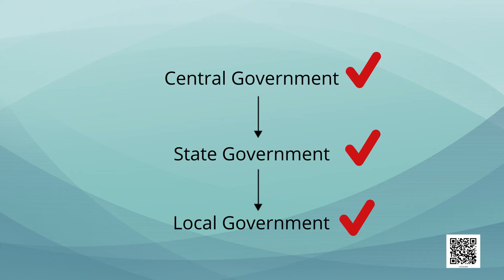We see that there is a vertical distribution of power — that is, power is coming from the upper to the lower level. That is why it is called vertical distribution. This is power sharing at different levels of government.